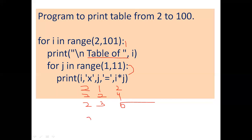When J reaches 10, the inner loop finishes and control returns to the outer loop. Now I becomes 3. J again goes from 1 to 10 in the inner loop, printing 3 x 1, then 3 x 2, then 3 x 3, and so on. Like this, the whole table completes.